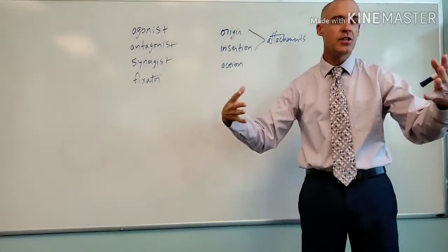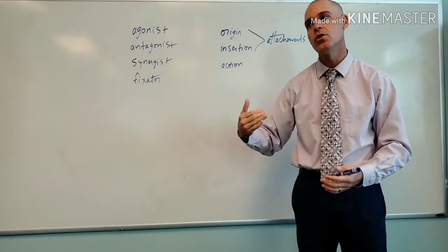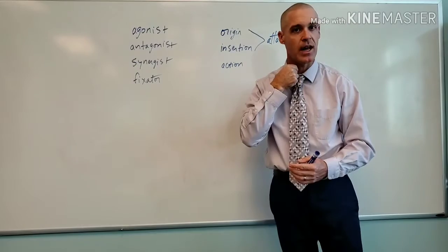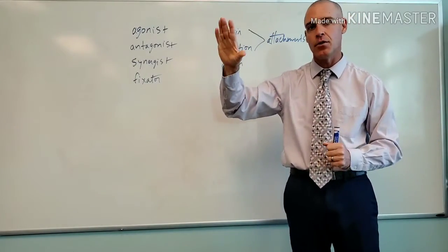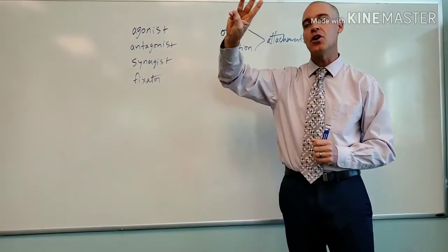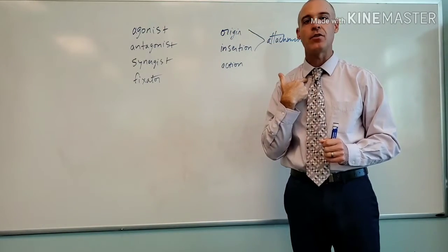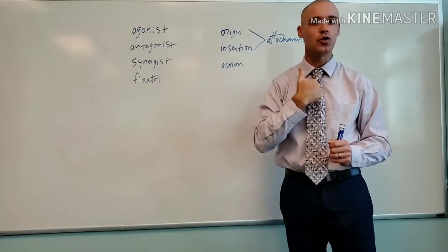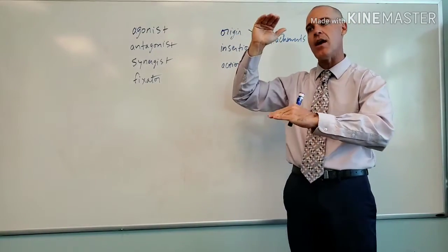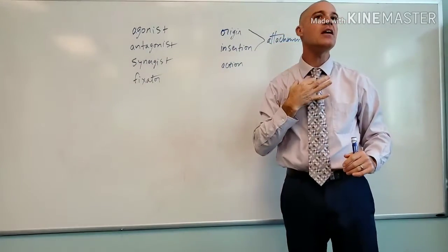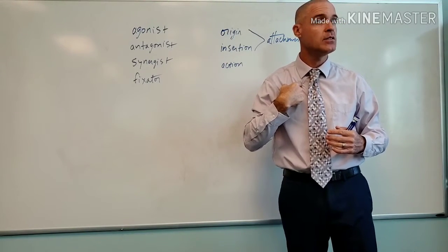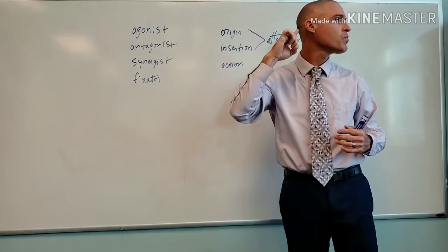Now we'll use another example — one that's slightly harder, with multiple bony attachments. We'll use the sternocleidomastoid muscle. The name is actually easy because it gives you the three bony attachments: sternum, cleido meaning clavicle, and mastoid — the mastoid process. So you know it attaches to those three bones. Even though you have three bones, you still have two ends. One end is clearly sternum and clavicle — two separate bones but one end — versus the other end at the mastoid.